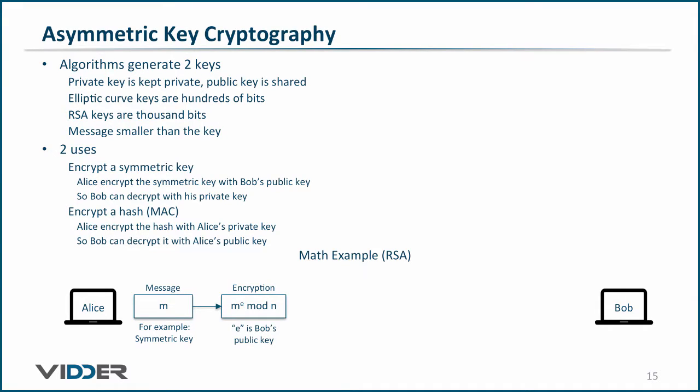Using the RSA algorithm, she will multiply the message times itself E times modulo N, where E is Bob's public key. The result is the ciphertext, and that can be sent across an untrusted network.